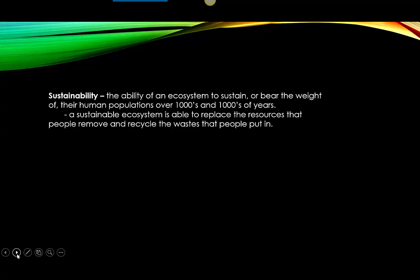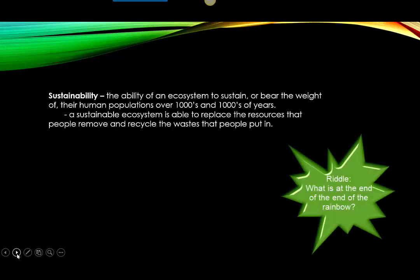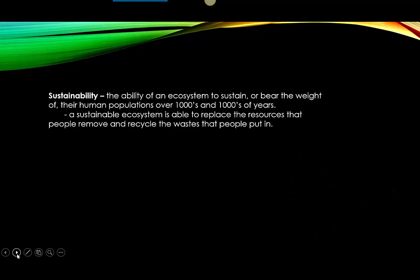The Aboriginal peoples, prior to the landing of the Europeans, were living in a sustainable way and had been for thousands of years. A sustainable ecosystem is one that's able to replace the resources that we remove and recycle the waste that we put in. Most of the human ecosystems that we are affecting on a day-to-day basis are not sustainable — we are taking out resources way too fast and putting in way too much waste.